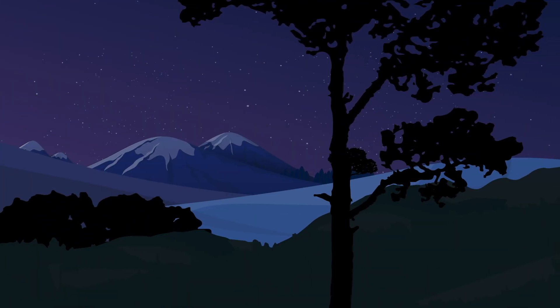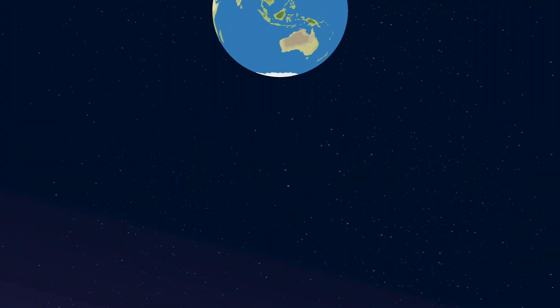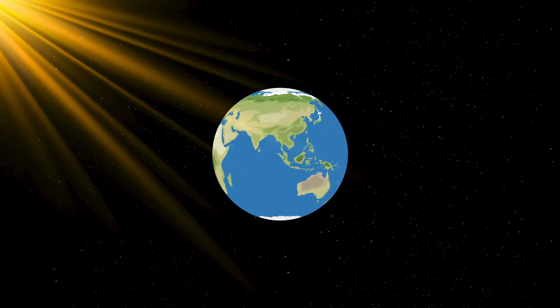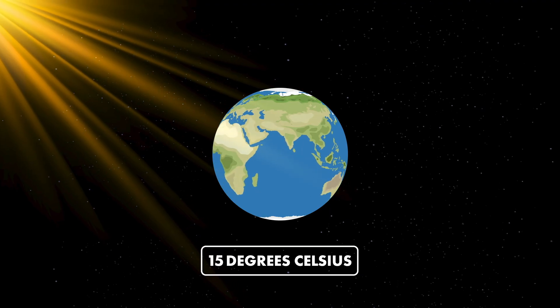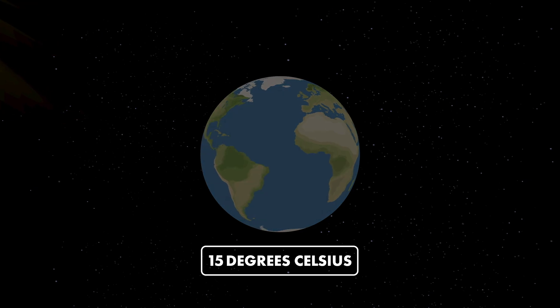Earth would not only get darker without the sun, but it would also experience a dangerous temperature drop. The average surface temperature today is about 15 degrees Celsius or 59 degrees Fahrenheit, warmed in large part by heat from the sun. Without it, surface temperatures would steadily decrease.